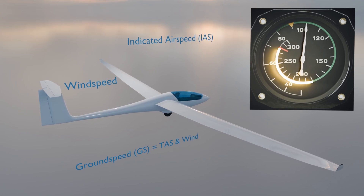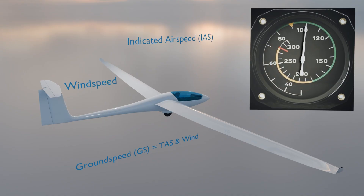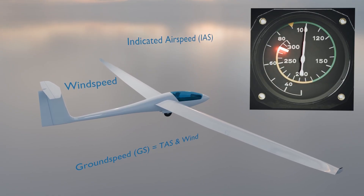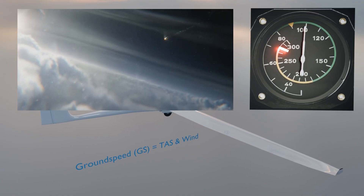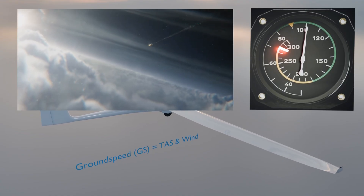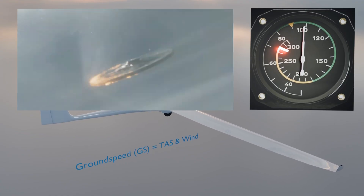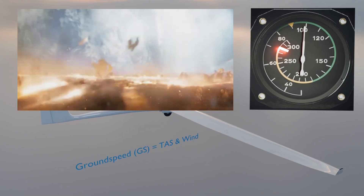The aircraft operating manual tells you exactly what's allowed and what isn't. Next is a thin red line — this marks the VNE, or velocity never exceed. This is basically warp speed: go beyond this and the aircraft starts to tear itself apart.